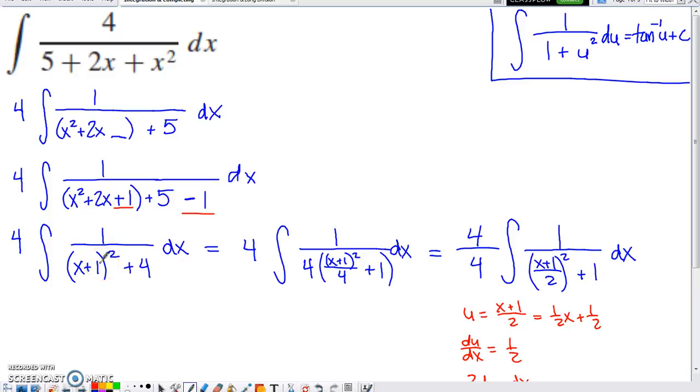So what we now have created within that denominator is we've created one quantity being squared, which is what this antiderivative formula basically needs for us to have within one of those two positions within the denominator before we can use it. Now the issue that we still do have is that the other position within this denominator has to be a positive 1.